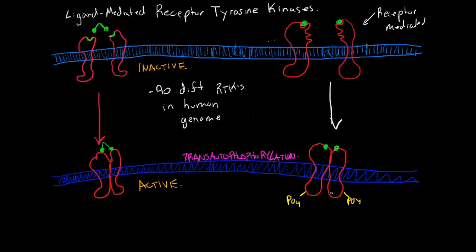Regardless of whether it's ligand-mediated or receptor-mediated, the same thing happens. Once dimerized, the same mechanism occurs. Trans autophosphorylation is the kinase activity of one receptor phosphorylating the tyrosine residues of the other dimer.